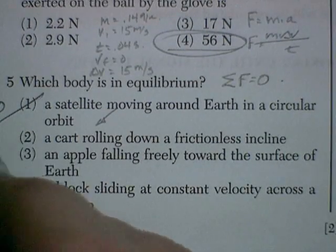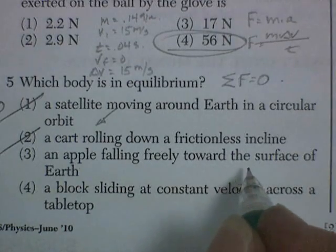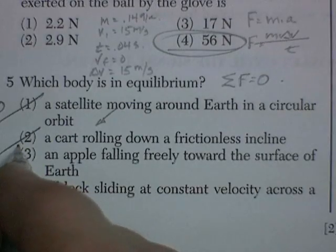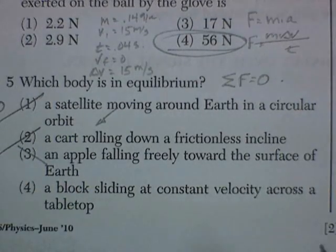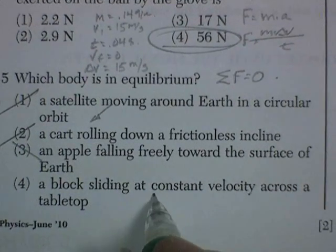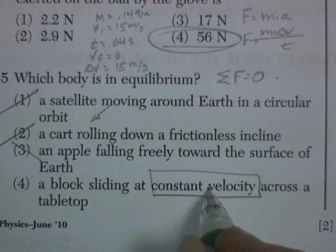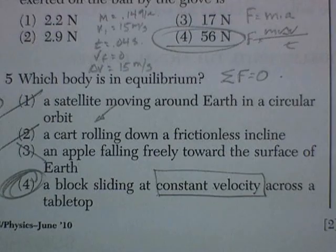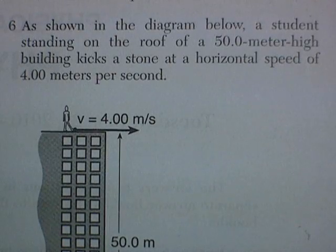Now if that happens, it's going to be accelerating because of gravity. An apple falling freely towards the surface of the Earth. That's also accelerating. It's the same one as that one. A block sliding at constant velocity. No acceleration across a tabletop. That's the correct answer. No acceleration.